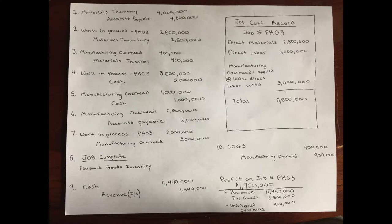For number four, total direct labor hours consumed on the job cost $3 million. The amount in wages is already paid. Work in process is debited for job PK03 for $3 million, and cash is credited for $3 million. For number five, indirect labor hours relevant to the project cost $1 million. Manufacturing overheads are debited $1 million and cash is credited $1 million.